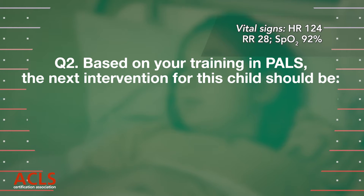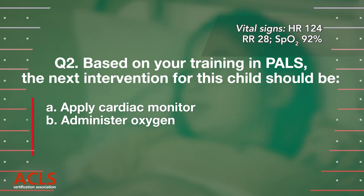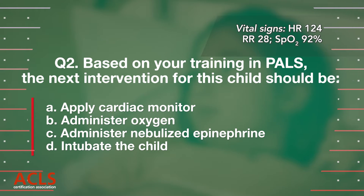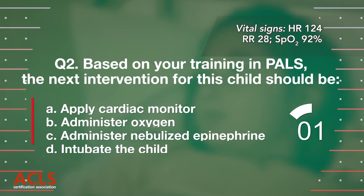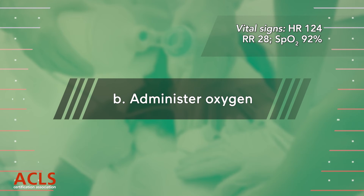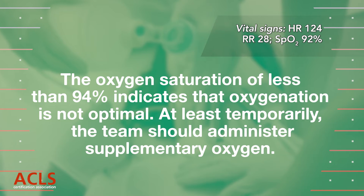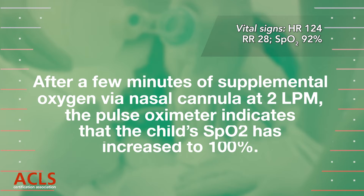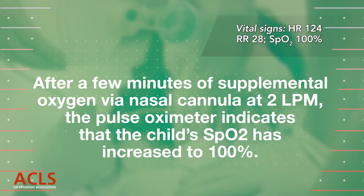Question 2: Based on your training in PALS, the next intervention for this child should be: A) Apply cardiac monitor; B) Administer oxygen; C) Administer nebulized epinephrine; D) Intubate the child. Correct answer B — Administer oxygen. The oxygen saturation of less than 94% indicates that oxygenation is not optimal. After a few minutes of oxygen, the pulse oximeter indicates the child's oxygen saturation has increased to 100%.